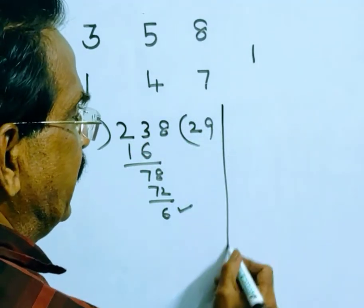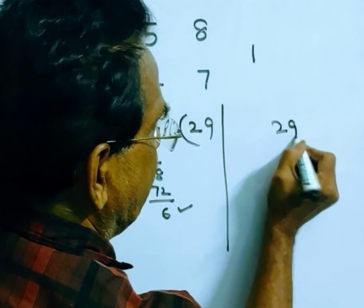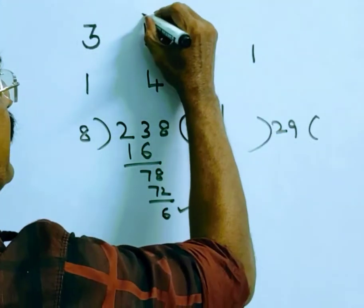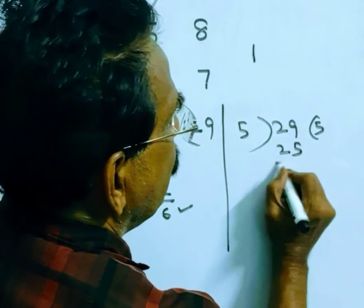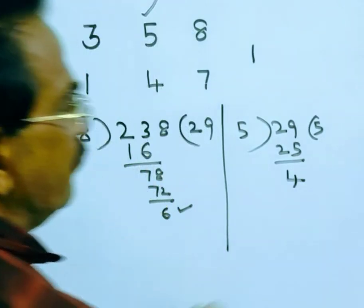Then let us divide 29 by the second divisor, 5. 5 into 29 is 25. So the remainder is 4.